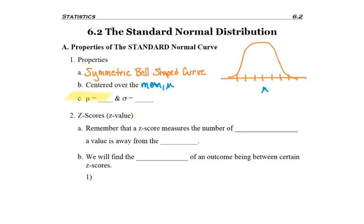But what's specific to the standard normal curve is that the mean is zero and the standard deviation is one, every single time. It's always going to be zero and one. There's no exceptions.